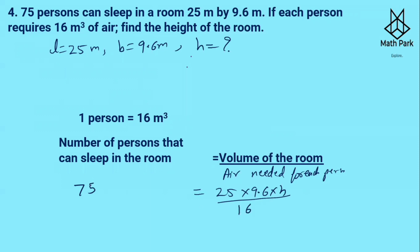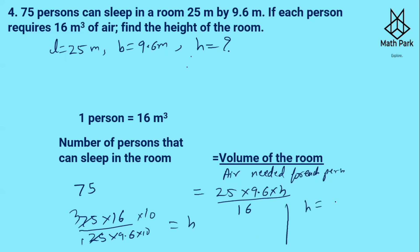Rearranging: h = 75 × 16 ÷ (25 × 9.6). Multiplying numerator and denominator by 10: h = 3 × 16 × 10 ÷ 96. Simplifying 96 ÷ 16 = 6, then 3 × 10 ÷ 6 = 5. So the height of the room is 5 meters.